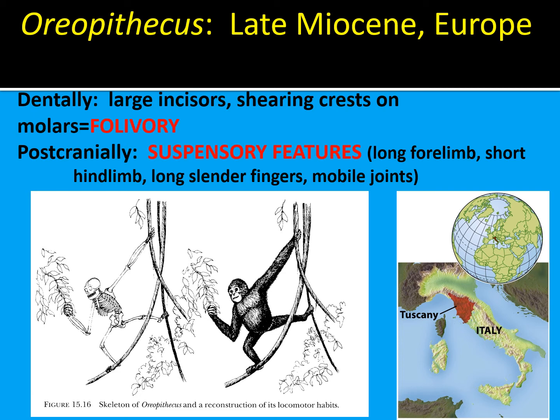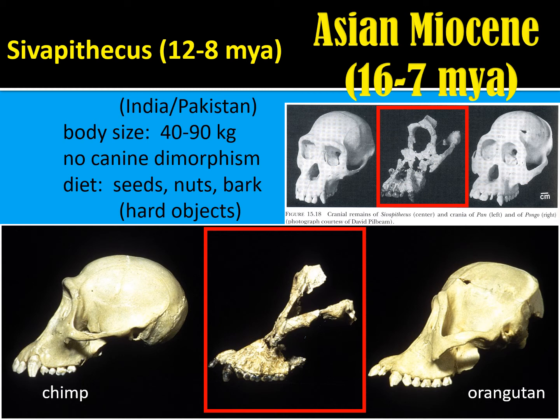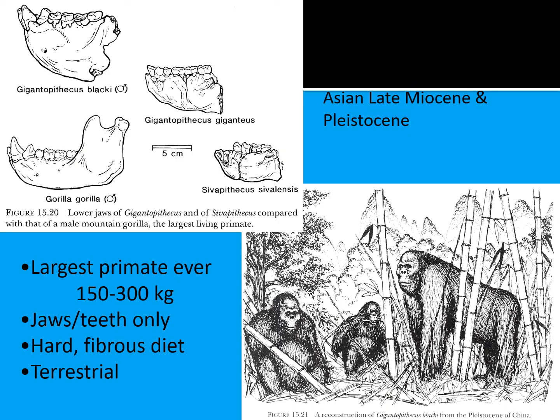In Asia, we have Sivapithecus from 12 to 8 million years ago, with specimens found in India and Pakistan. Body size was fairly large at 40 to 90 kilograms, with no canine dimorphism, and a diet of seeds, nuts, and bark based on their teeth. Looking at three skulls — a chimp on the left, Sivapithecus in the middle, and an orangutan on the right — the facial structure and facial prognathism of Sivapithecus are much more similar to an orangutan than a chimp. We think Sivapithecus may have been ancestral to our modern orangutans.